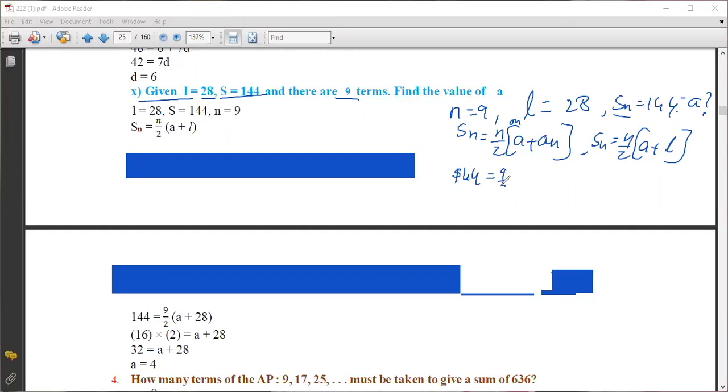So Sn means what? 144 equal to 9 by 2 into a plus 28. 144 into 2 equal to 9 into a plus 28.